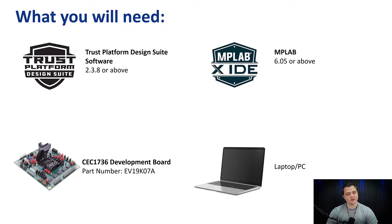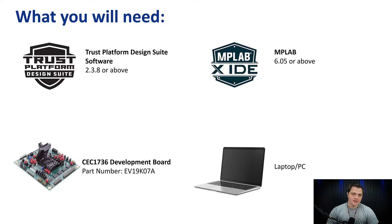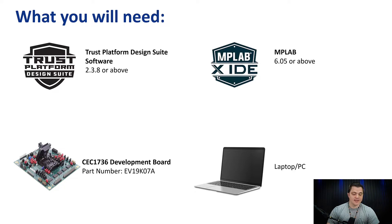To get started with this configurator, there are a couple of things that you'll need. The first obvious thing is a laptop or PC running Windows or a Linux operating system. We're also going to need some pieces of software, including Microchip's Trust Platform Design Suite version 2.3.8 or above. It shares some dependencies with the MPLAB X integrated development environment version 6.05 or above, so you will need to install that as well. And lastly, you're going to need the CEC1736 Development Board, or the EV19K07A, that is available for purchase on Microchip Direct.